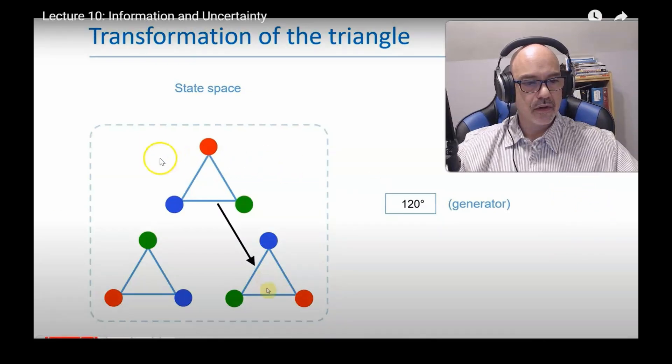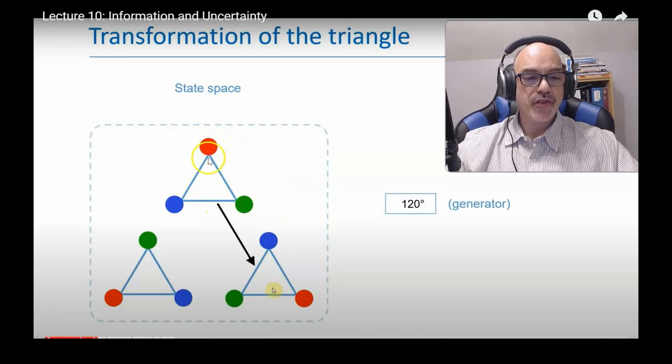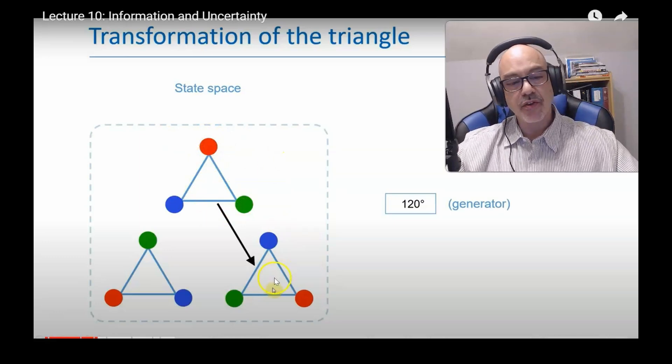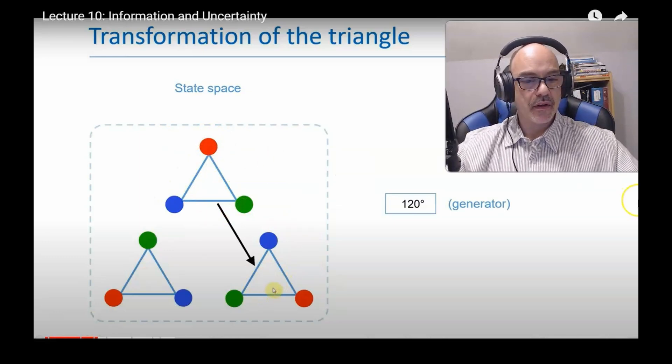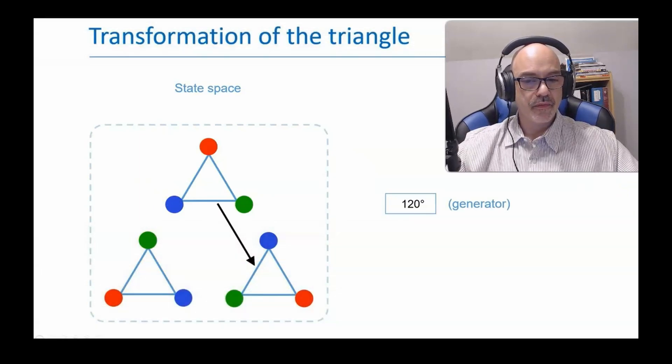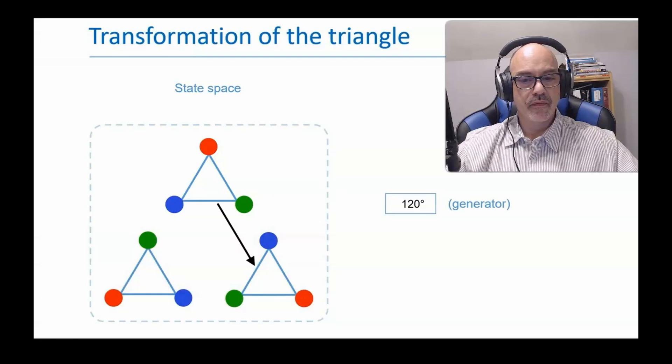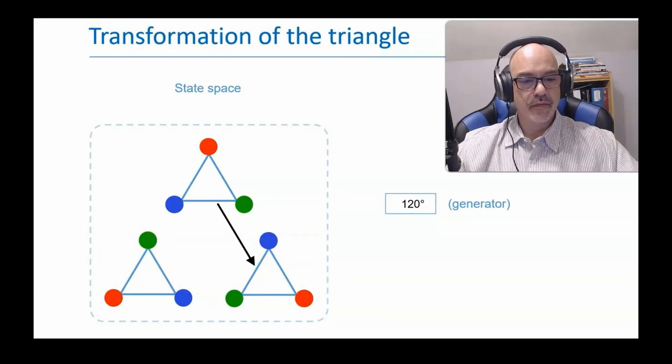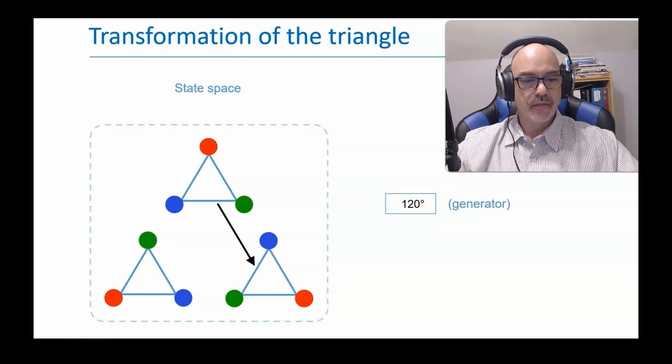That rotation moves from one state in the state space to another state in the state space. 120-degree rotation is a basic degree of freedom for this object, and we will imagine that we can apply that rotation by the click of a button. In group theoretical terms, this is the generator of the group.